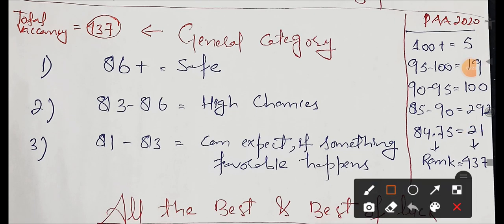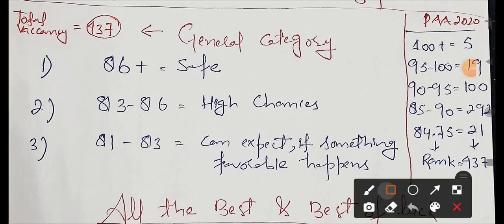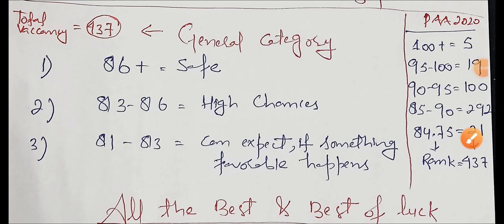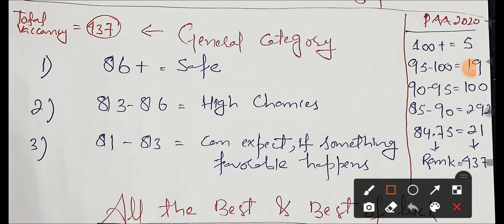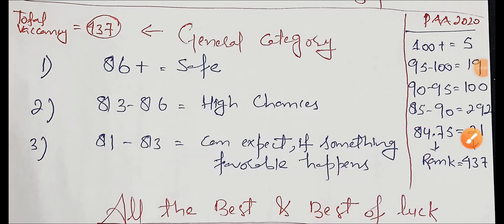For general category with 437 posts, if we talk about safe score, it will be 86 plus. You'll be safe, meaning you don't need to take any tension. If your score is 83 to 86, your chances are very high for the merit list. For 81 to 83, you can expect that if something favorable happens, you might get into the list.